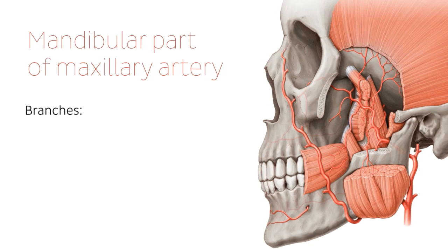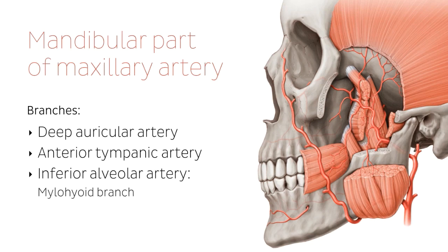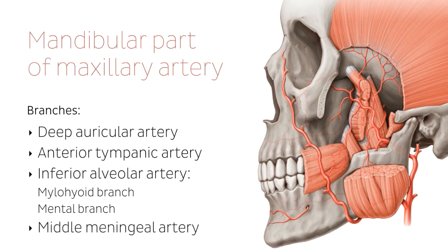There are a few branches we're going to be finding on this part of the maxillary artery, including the deep auricular and the anterior tympanic arteries, which are two arteries we cannot see in this image, so we're going to leave them for another tutorial. We're going to be talking about the inferior alveolar artery, which has two branches — the mylohyoid branch and the mental branch — and finally the middle meningeal artery.